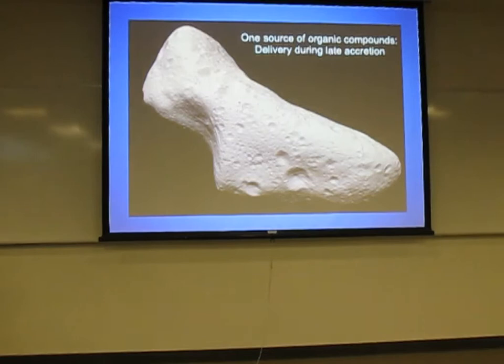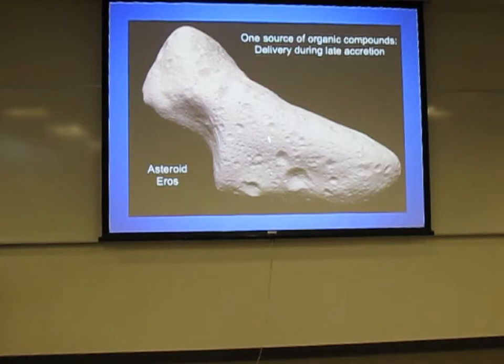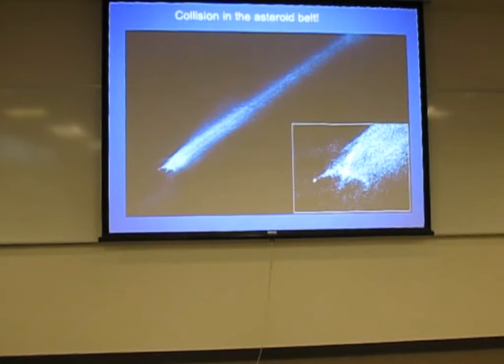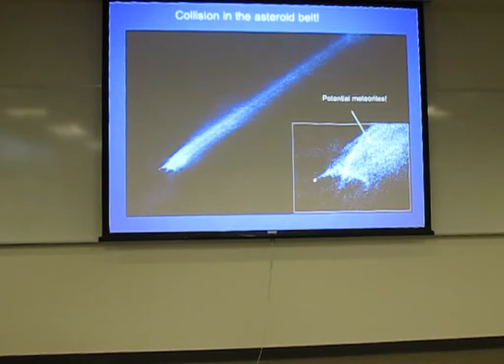We've extracted pieces of an asteroid that fall to Earth as meteorites. Here's an asteroid called Eros — notice all the impact craters from smaller asteroids hitting it. Every time that happens, meteorites are produced, and if they come to Earth, we can go out and pick them up. We've actually caught, just by accident, a collision in the asteroid belt — they thought it was a new comet, but it wasn't. All of that debris is potential meteorites.